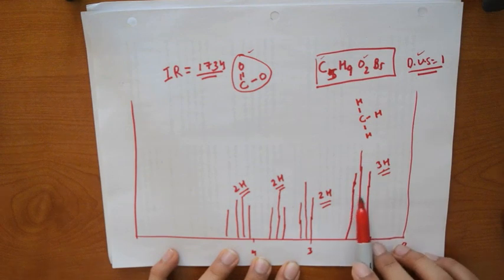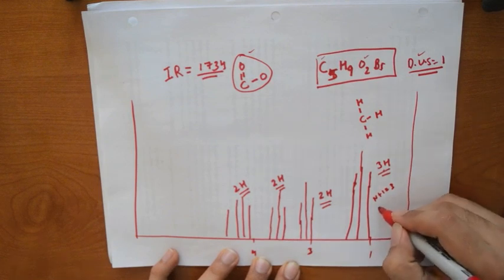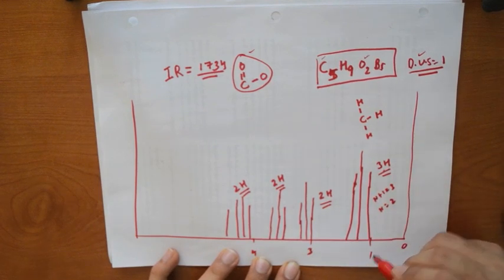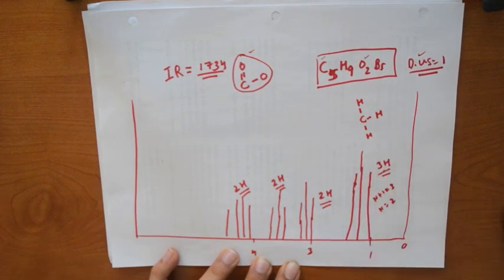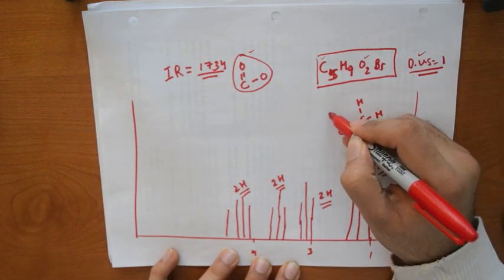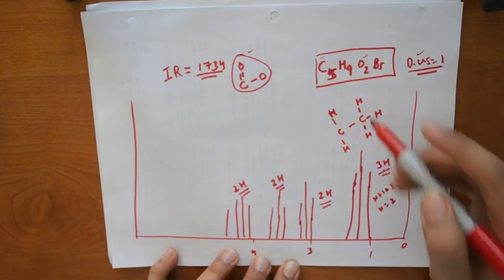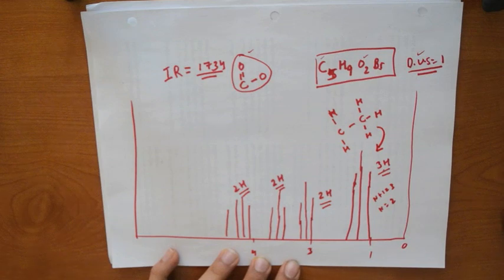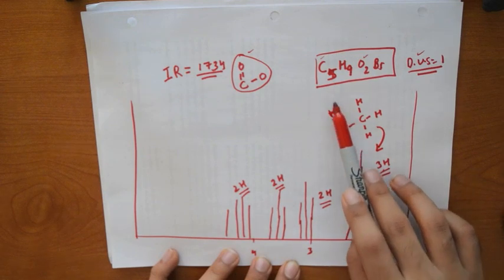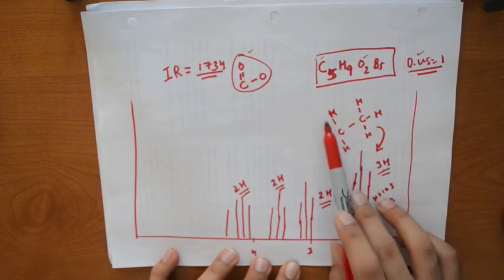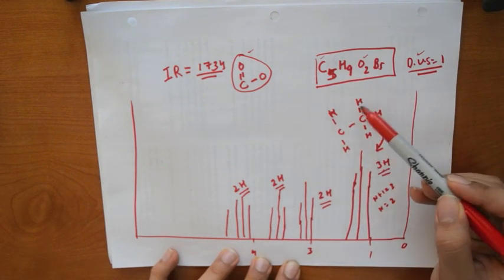Three hydrogens showing a peak of three. What's the n number? This tells you the n+1 number. So n+1 in this case is 3, so n in that case would be 2. There's two hydrogens beside these three hydrogens. Now if you know that these guys are splitting here, these two can also split these three.